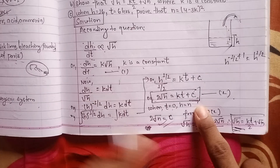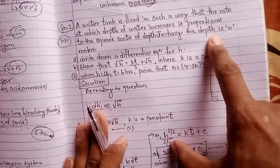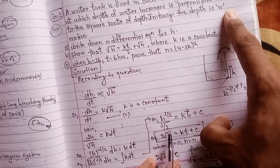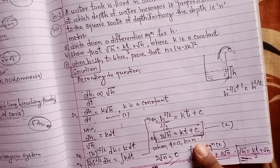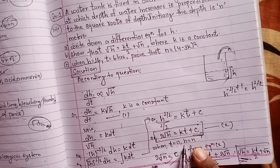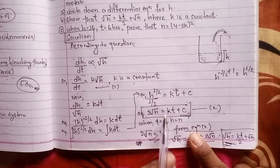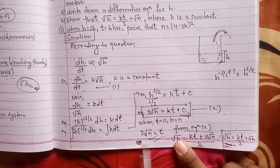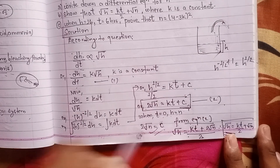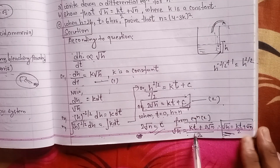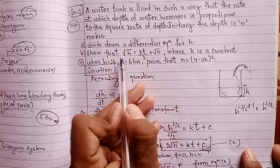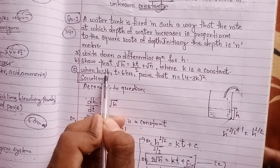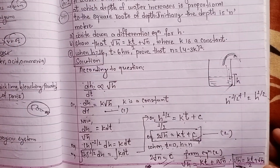Initially when time is zero, the depth is the same. The value of the height is n, so 2 times root n equals C. The equation is confirmed and the value is established for the water tank problem.